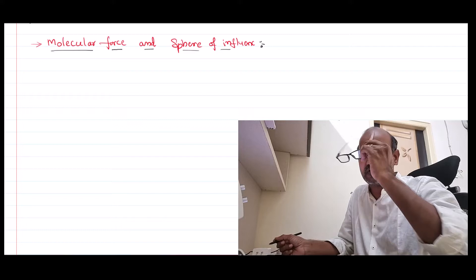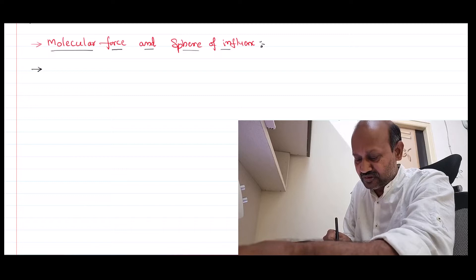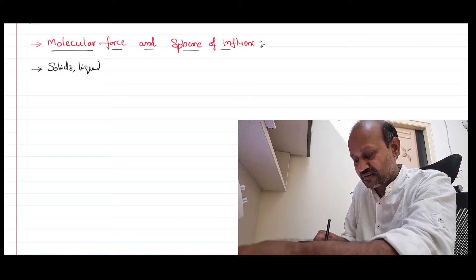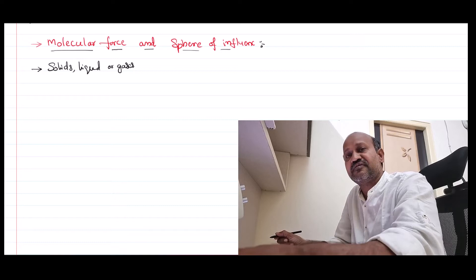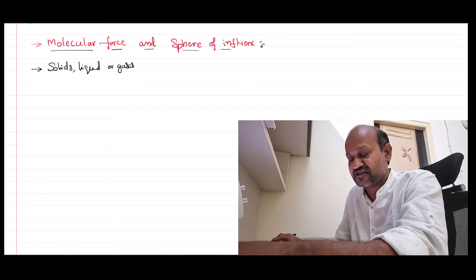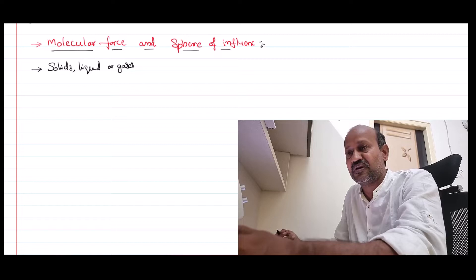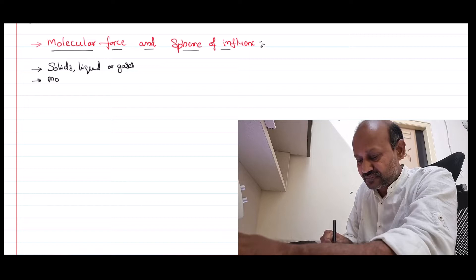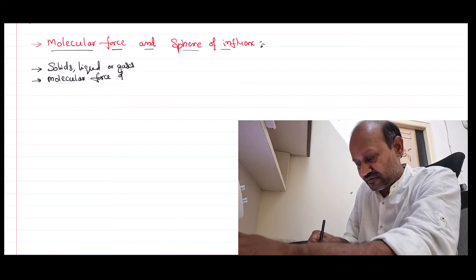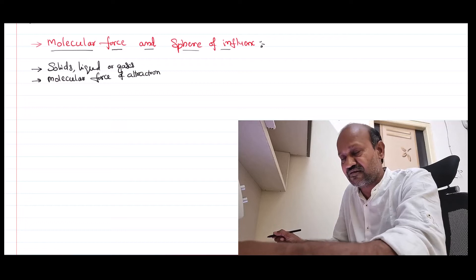You know solids, liquids, and gases — these are the three major states of matter. Why does a solid have a fixed shape? Why is a liquid loose and fluid? Why does a gas occupy an infinite volume? All these things can be explained based on a property called molecular force of attraction. These solids, liquids, and gases all have molecules.